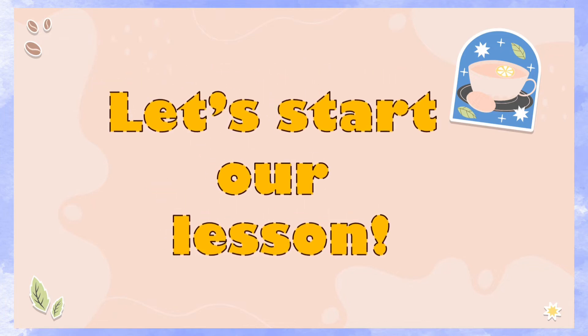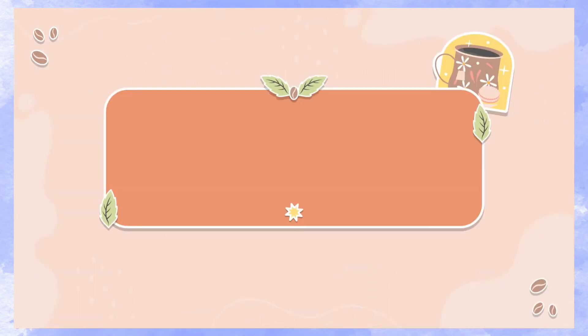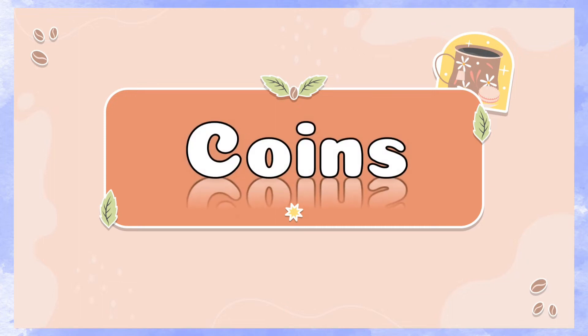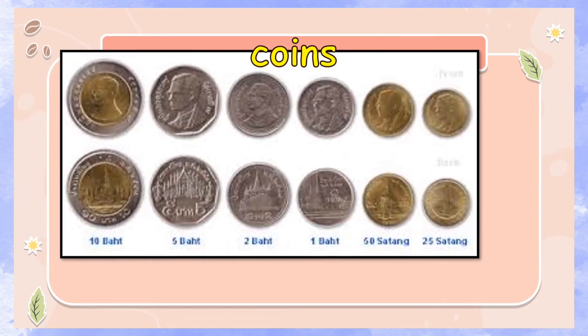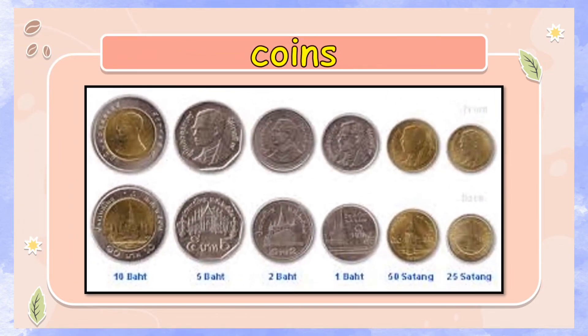Now, let's start our lesson. Coins. Here are some examples of coins. It is a flat, typically round piece of metal with an official stamp used as money.